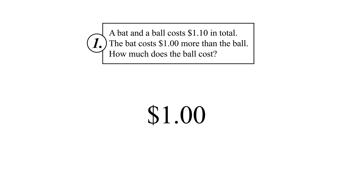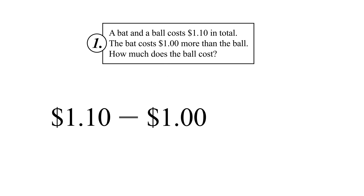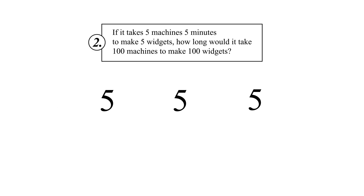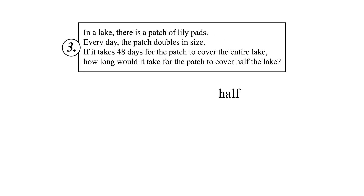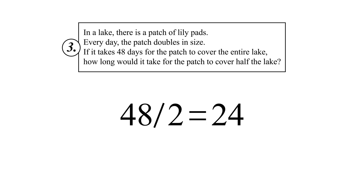For all of these questions, the intuitively wrong answer comes from matching up elements of the problem together that don't really deserve to be matched together. For the first question, you see $1 and $1.10, and the question seems to be about subtracting, so you just subtract those two even though it doesn't make sense. In the second question, you see five, five, and five, so 100, 100, and 100 continues that pattern. You see half and you know the total number of days is 48, so you just halve the number of days, even though that doesn't make sense.